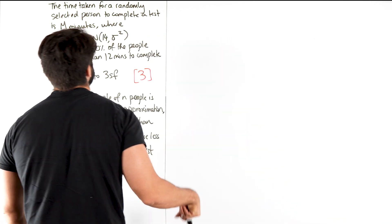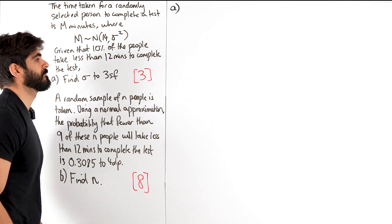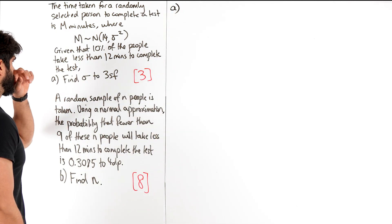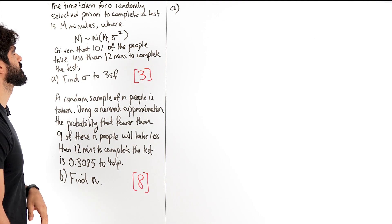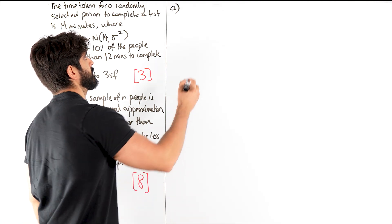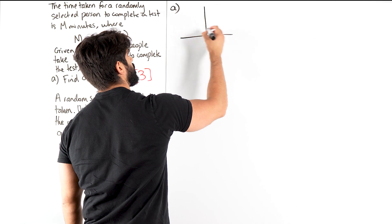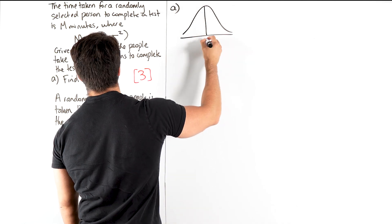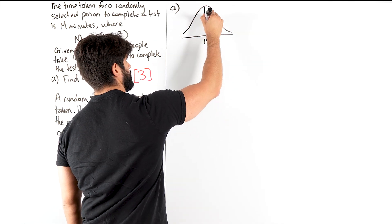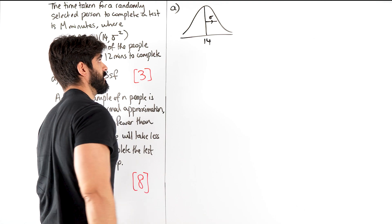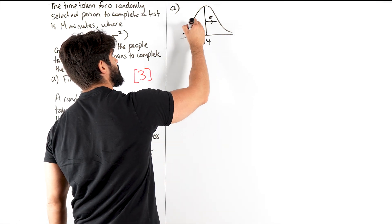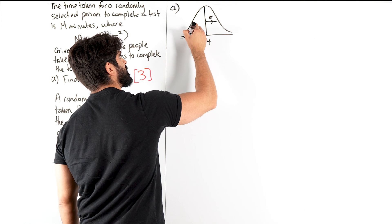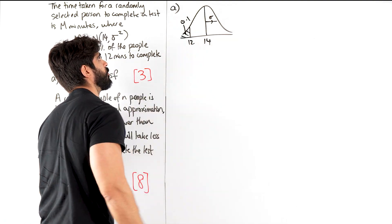Okay, so they've already defined our distribution, so we don't need to define it again. It says given that 10% take less than 12 minutes. Okay, so we always draw a picture. So just a quick one. We have the mean is 14 and the standard deviation is sigma. Less than 12 is 10%, so this area is 0.1.